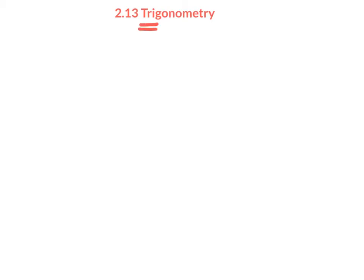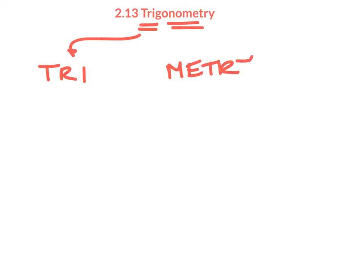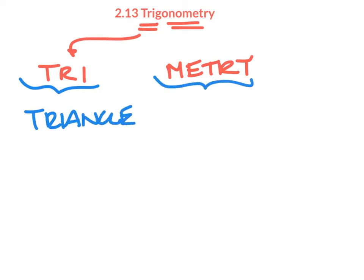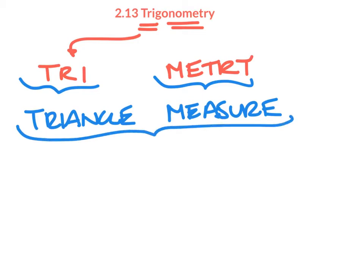Trigonometry has two parts to its word that hint at what it's about: 'tri' and 'metri.' Tri means triangle and metri means measure. So ultimately, through trigonometry we are going to learn how to find the measures of a triangle, which includes both finding angles and sides.